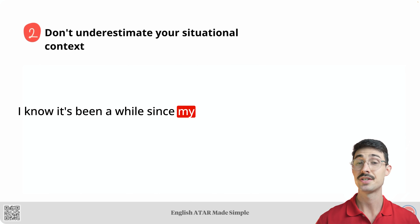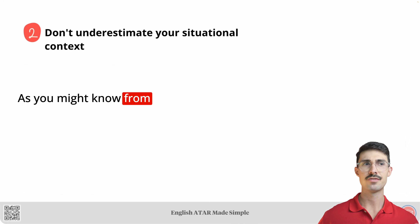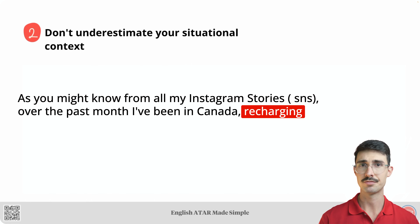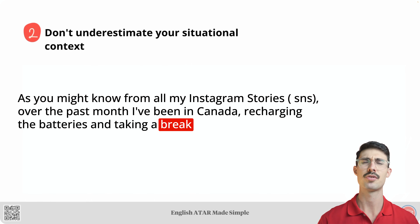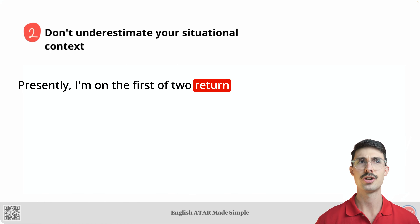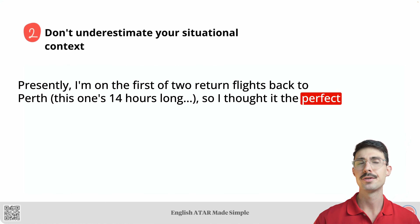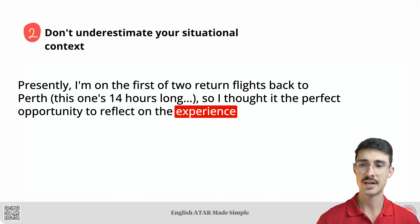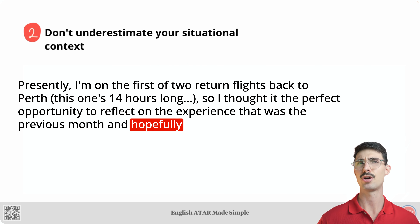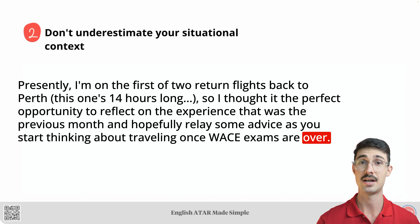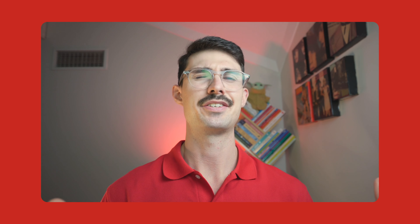Here's a very brief introduction of a blog post written with the situational context from prompt two in mind: 'I'm back. I know it's been a while since my last post. As you might know from all my Instagram stories — over the past month, I've been in Canada, recharging the batteries and taking a break from work. Presently, I'm on the first of two return flights back to Perth. This one's 14 hours long, so I thought it the perfect opportunity to reflect on the experience and hopefully relay some advice as you start thinking about traveling once place exams are over.' Imagine what that introduction would sound like had I chosen prompt one instead — it just wouldn't have had the same realistic and personal feel to it.